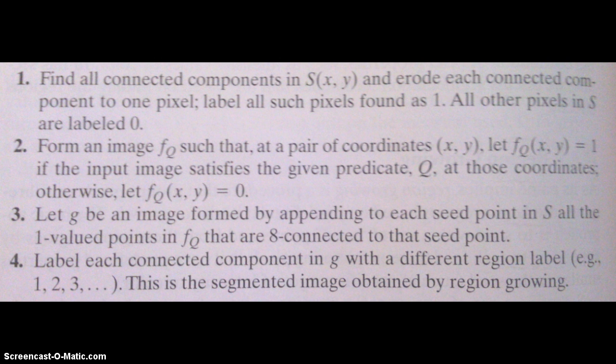I'm now going to go over the four-step process that's in the book. To start with, let f denote the input image, your original starting image. Let s(x,y) denote the seed array. The seed array has ones that contain the specific locations of wherever the seeds are and zeros everywhere else. Let Q denote the predicate that is applied to each location. The Q predicate is the process that determines whether pixels will be appended to the seeds and it's what grows the region.